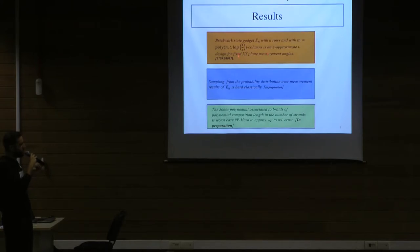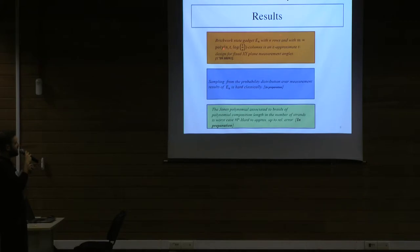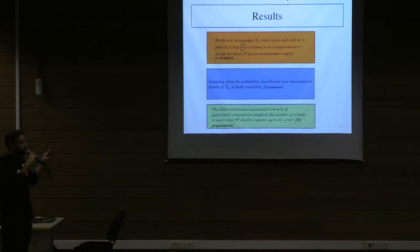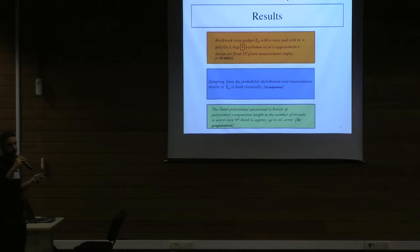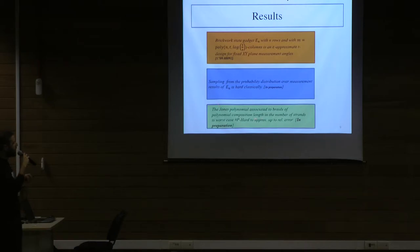So the main results: a brickwork gadget — an MBQC with measurement angles — with n rows and m columns (where m is a polynomial in n, t, epsilon) is an epsilon-approximate T-design for fixed XY-plane measurements. This can be found at the arXiv link provided. The second result is still in preparation: as an application to this graph gadget, we can show that sampling from the output probability distribution is hard to do classically given the usual complexity-theoretic conjectures.